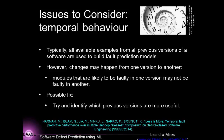Another issue is temporal behavior. Typically, examples from all previous versions of a software are used to build defect prediction models. However, as software evolves from one version to another, changes happen — a module likely to be faulty in a previous version may not be so faulty in the new version. To address this, you can try to identify which previous versions are most useful for predicting defects in the current version, by comparing the input features of previous versions with the current version. This is a very new and active research topic.